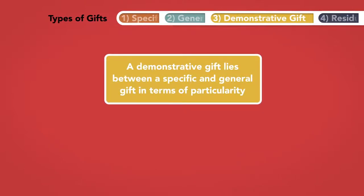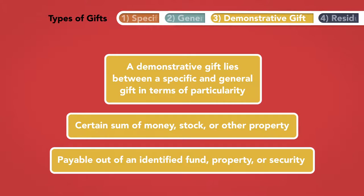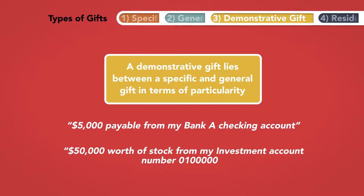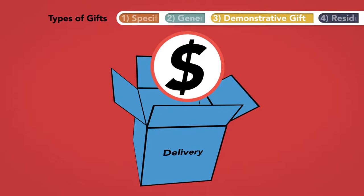3. Demonstrative gift. A demonstrative gift lies between a specific and general gift in terms of particularity. Like a general gift, a demonstrative gift is a certain sum of money, stock, or other property. But unlike a general gift, it is payable out of an identified fund, property, or security. An example of a demonstrative gift might be $5,000 payable from my Bank A checking account or $50,000 worth of stock from my investment account number 0100000. While there is no specific item to be delivered, there is a specific amount or value to be delivered from a source.